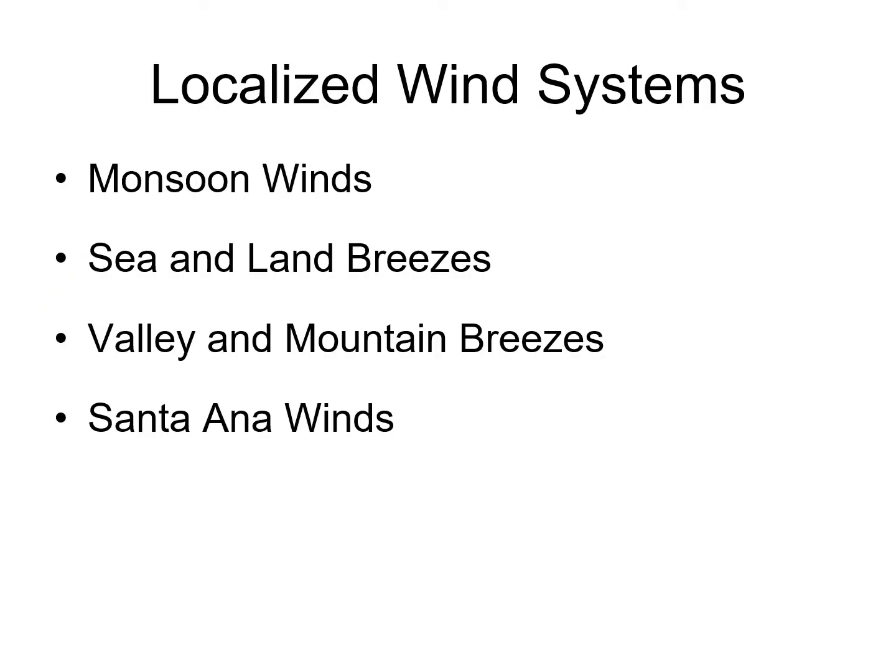Now we also have to deal with not just our regional or global wind systems, but also our localized wind systems. The ones I really want you to know — because this is a physical geography class, not a weather class — are monsoon winds, land-sea breezes, and Santa Ana winds. Those three are the most important, so that's what I'm going to spend time on in this review.